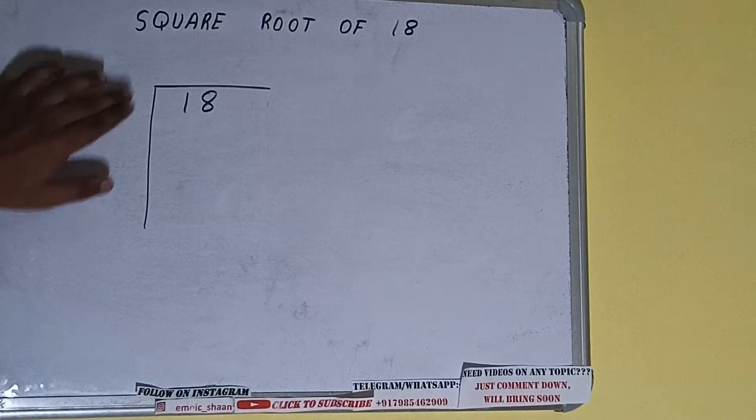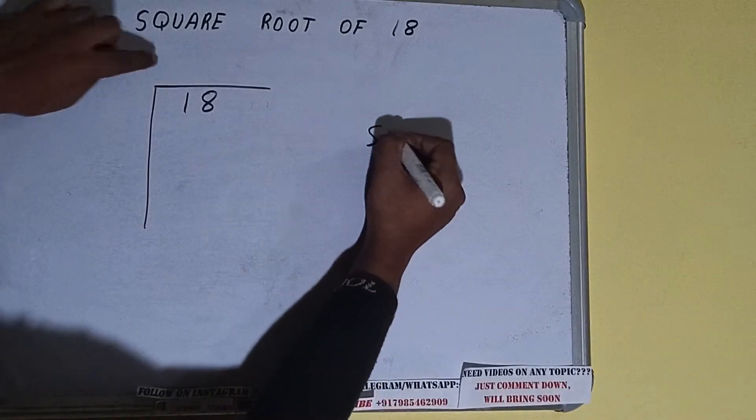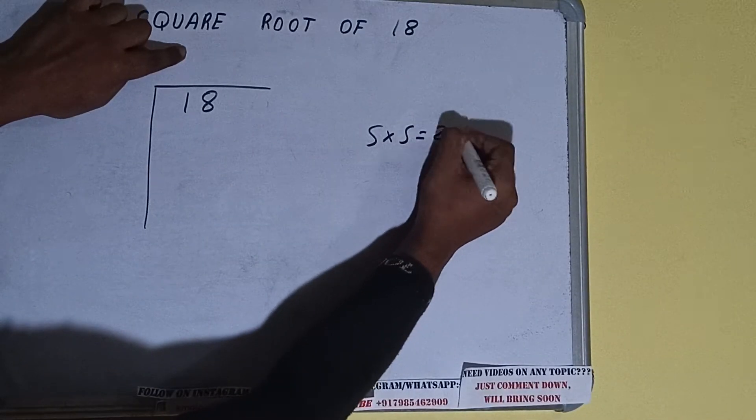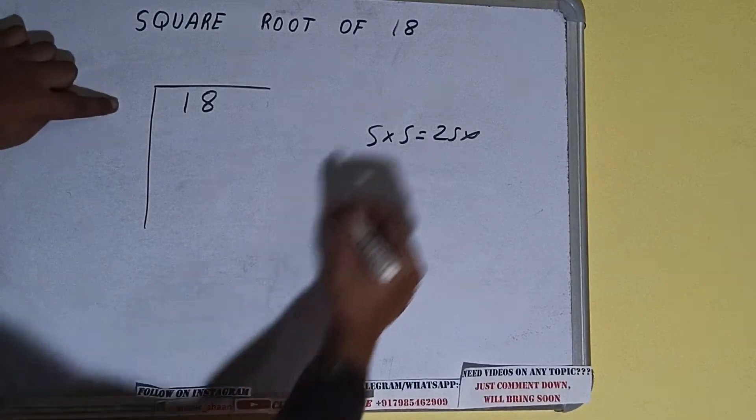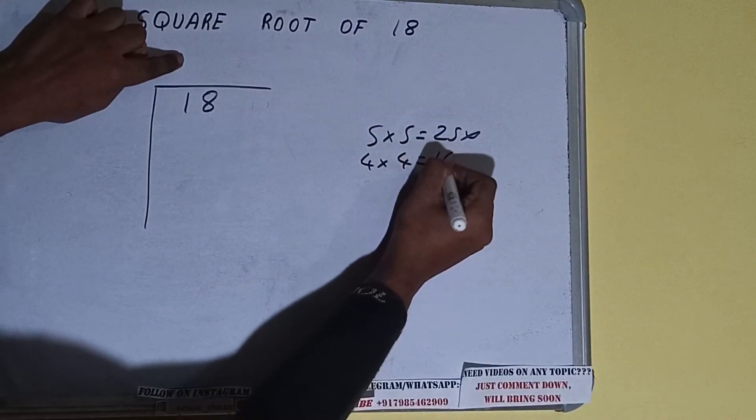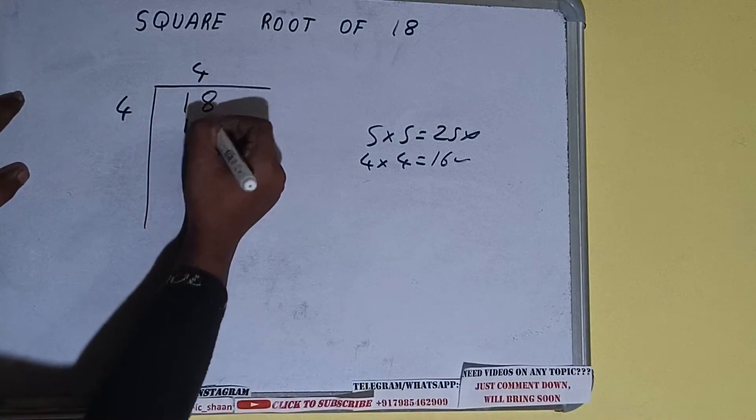So if we write 5 here and 5 here, it will be 25, which is greater than 18, so we cannot take it. If we write 4 here and 4 here, it will be 16, which is good to take. So 4 here and 4 here, 16.